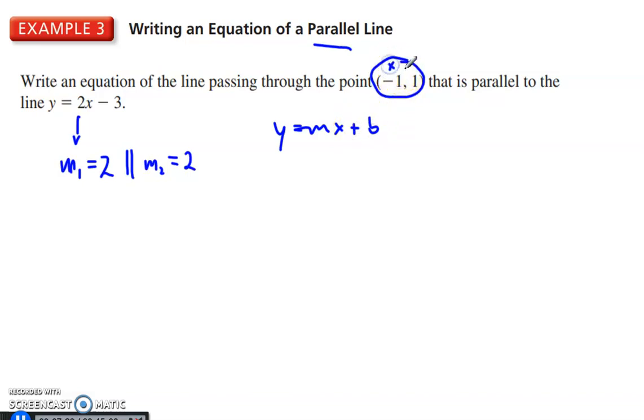And we'll replace x and y. Okay, y is 1. To find B, M is 2. 2x is negative 1. Plus B. Now we have negative 2 here. Plus B is equal to 1. Add 2 to each side. And we have B equals 3. And then we can write the equation with these two. Y equals 2x plus 3.